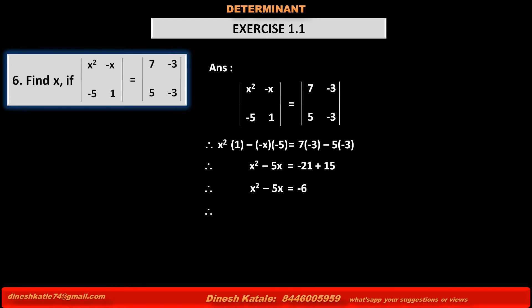Therefore, if we transpose minus 6 to the left-hand side, it becomes plus 6 and we get the quadratic equation x squared minus 5x plus 6 is equal to 0.